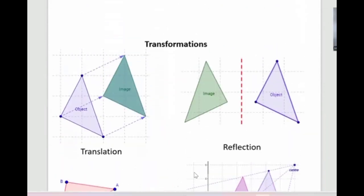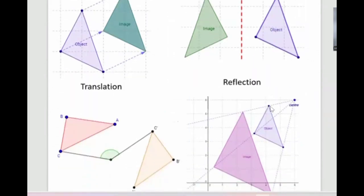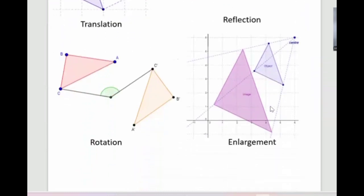Here's another example of translation — this is the object you need to translate. This is a reflection. This is a type of dilation — enlargement or reduction. This is the object and this is the image, so we enlarged the image. And this is the rotation — we rotate this triangle.